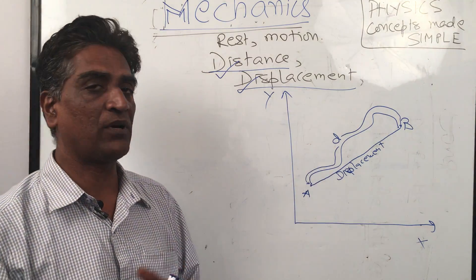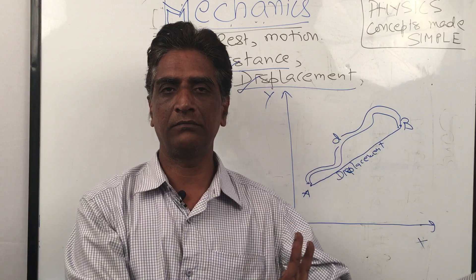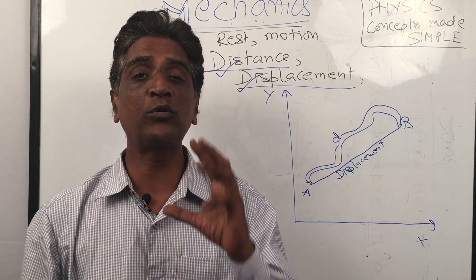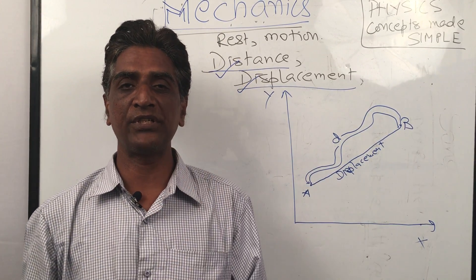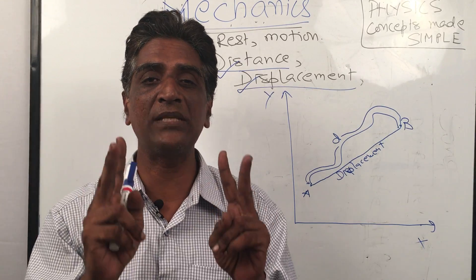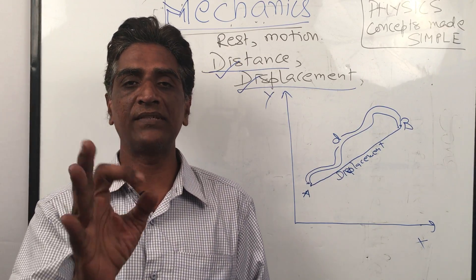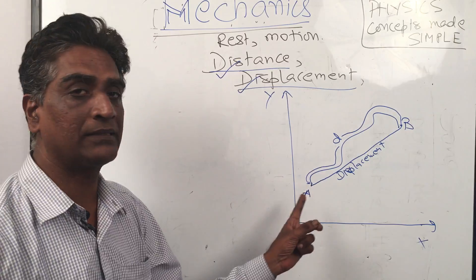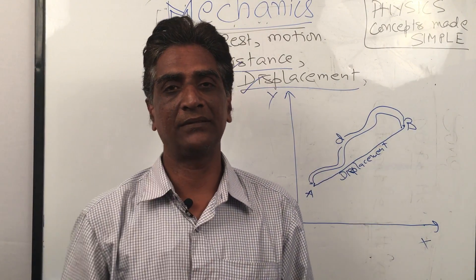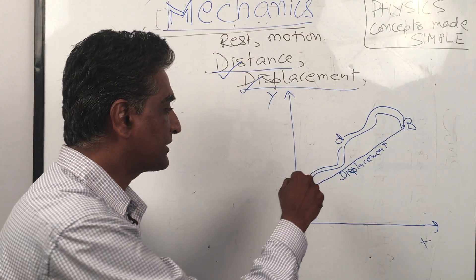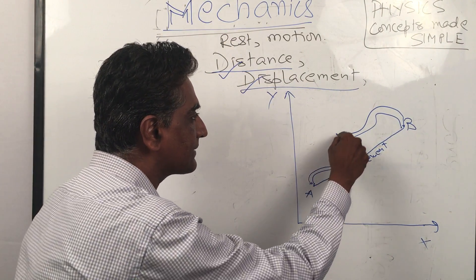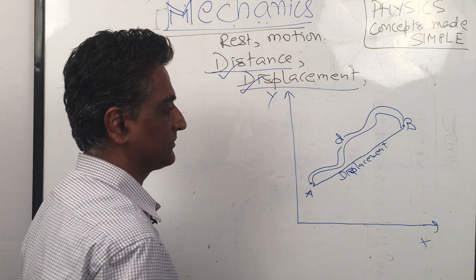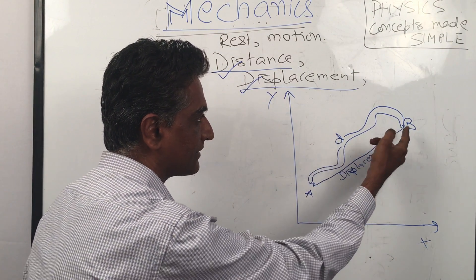So we have two concepts of the amount of change in position. In physics there are precisely two ways of saying it: one is distance and the other is displacement. In this example, distance is greater than displacement, because displacement is the net result — just the straight-line separation.